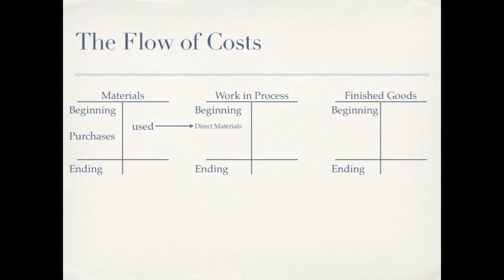Along with direct materials we need a few other things to create a product — we would need labor and we would need overhead. Direct materials can be directly traced back to a product and are usually a very large part of the cost of a product. Direct labor are the people actually putting the product together, creating the product — also a large portion of the cost of the product.